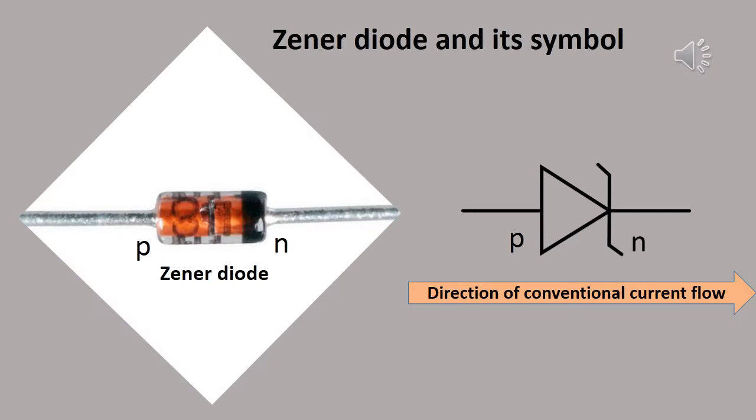In the symbol you are able to see the arrow head — that triangular part is the P end. That arrow head shows the direction of the conventional current. The N end is represented by a line which resembles the English letter Z. So the circuit symbol must be used while drawing the Zener diode in a circuit.